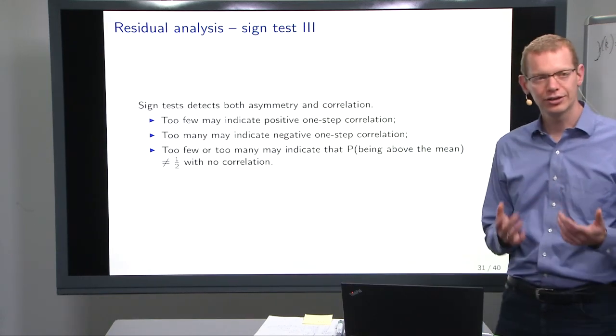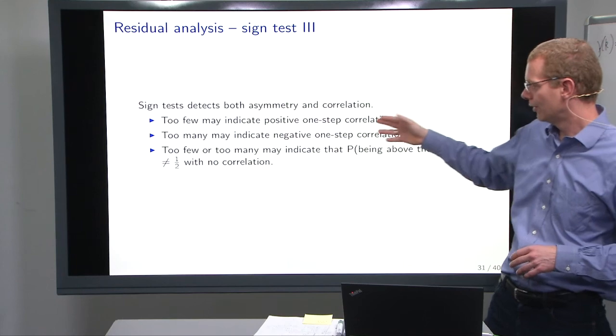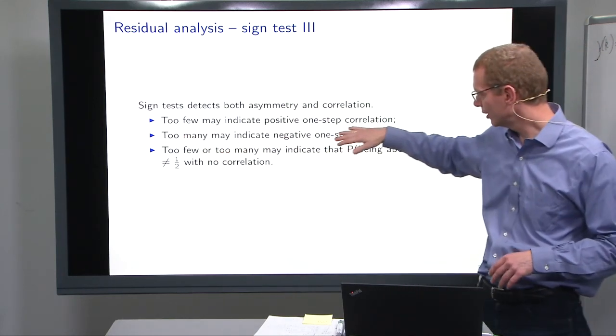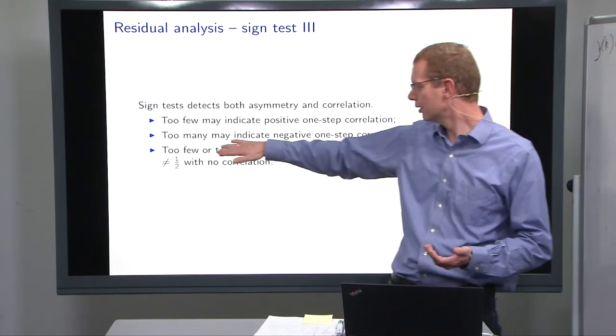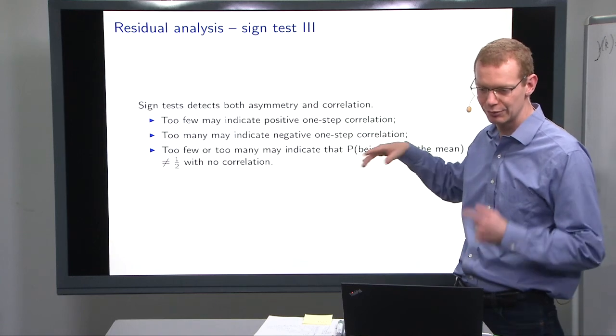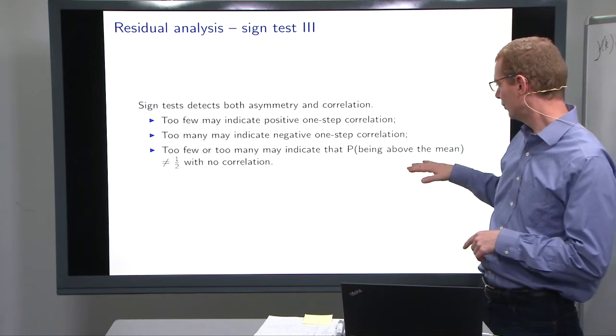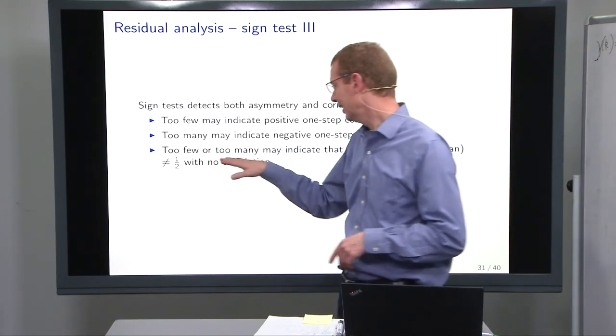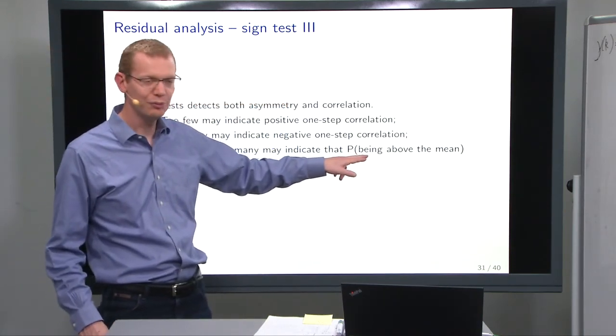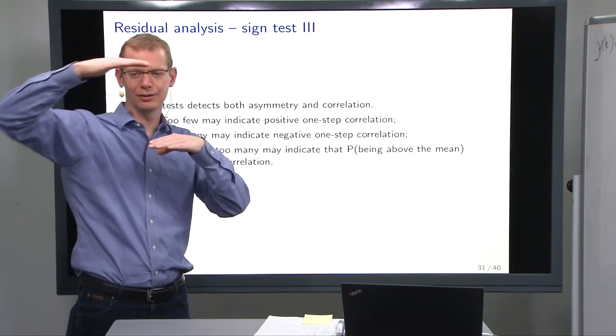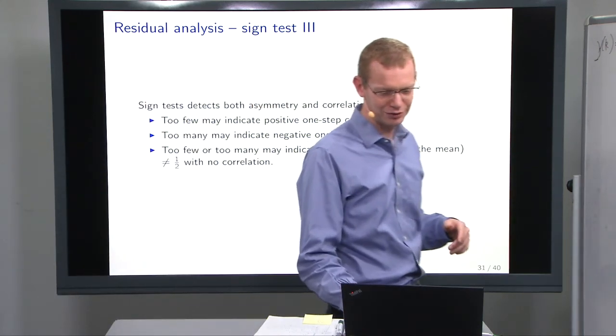What does the sign test help you identify when it fails? If you have too few sign changes, then you could have a positive one-step correlation. If you have too many, then you could have a negative correlation, meaning that you change sign every time. But it could also be that either too many or too few may indicate that the probability of being above the mean value, as in you have a biased process, then that may also give something that is different.